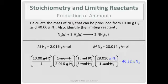So 10.00 grams of hydrogen requires 46.32 grams of nitrogen. Look how much nitrogen we actually have though - we have 40.00 grams of nitrogen. We don't have enough nitrogen to react with all the hydrogen gas, so that means